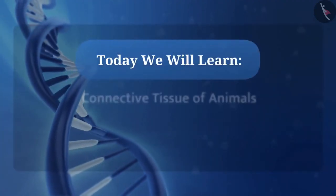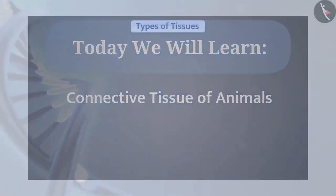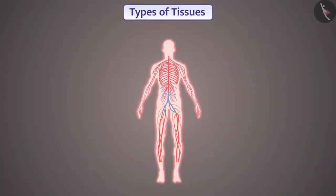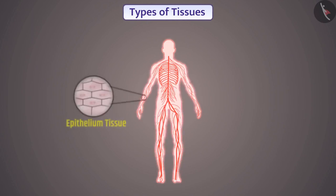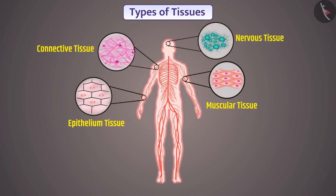Today we will learn about the connective tissue of animals. In the body of animals, various tissues together perform the different functions of the body. On the basis of functions performed by tissues, animal tissue is classified into epithelium tissue, connective tissue, muscular tissue and nervous tissue. Now let's understand the connective tissue of animals.